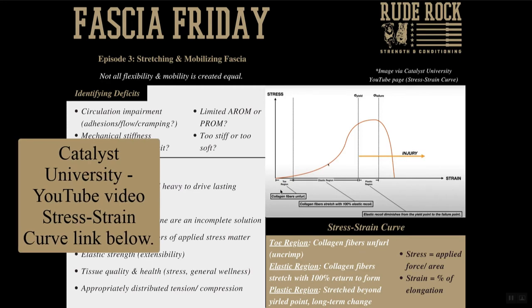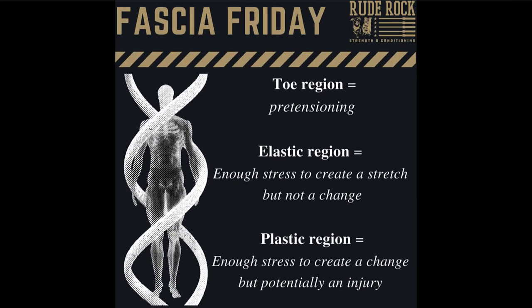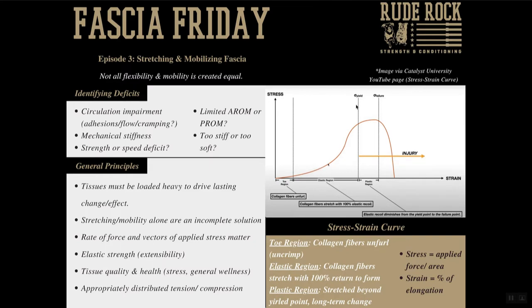To give you the nuts and bolts here: when looking at a stress-strain curve, we have a few specific areas to understand. The first is the toe region, where collagen fibers start to unfurl or uncrimp — we're getting a little lengthening to bring collagen fibers back to equilibrium so strain can be applied with movement. Next is the elastic region, representing the tissue's ability to stretch and return to form. The yield point is the delineation between elastic and plastic regions. In the plastic region, we're able to drive true change and adaptation, but the potential for injury also rises. We have to reach the plastic region, but going too far puts us into the failure point — where ruptures and injuries occur.